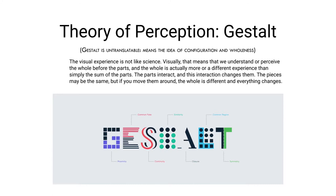We're getting closer to how this relates to design. The visual experience is not exactly like science. Visually, it means that we can understand or perceive the whole before the parts, just like I just did with the Y on that orange background. The whole is actually a different experience than simply the sum of the parts — it is other than the sum of the parts. The parts can interact, and this interaction changes them and what they are. The pieces might be the same, but if you move them around, the whole is very different and everything changes.